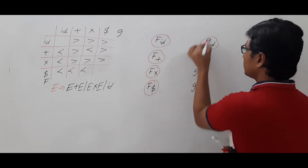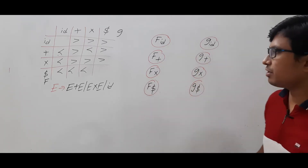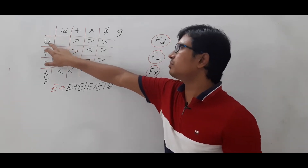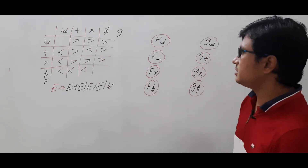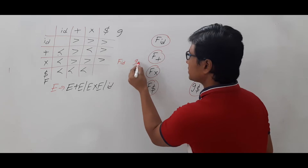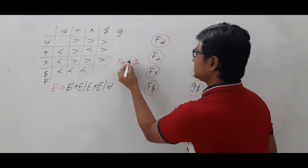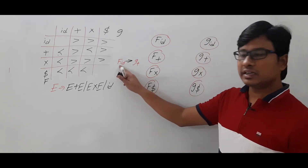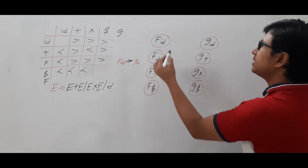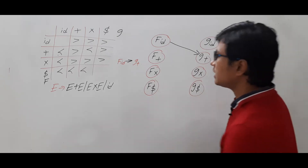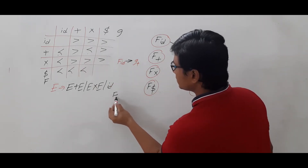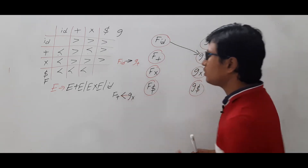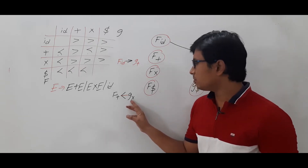Now we need to construct the graph by finding the edges. If an entry is undefined, there is no edge. For f(id) and g(plus), the symbol is greater than, so you draw an edge from f(id) to g(plus). For f(plus) and g(multiplication), the symbol is less than, so the edge goes from g(star) to f(plus).